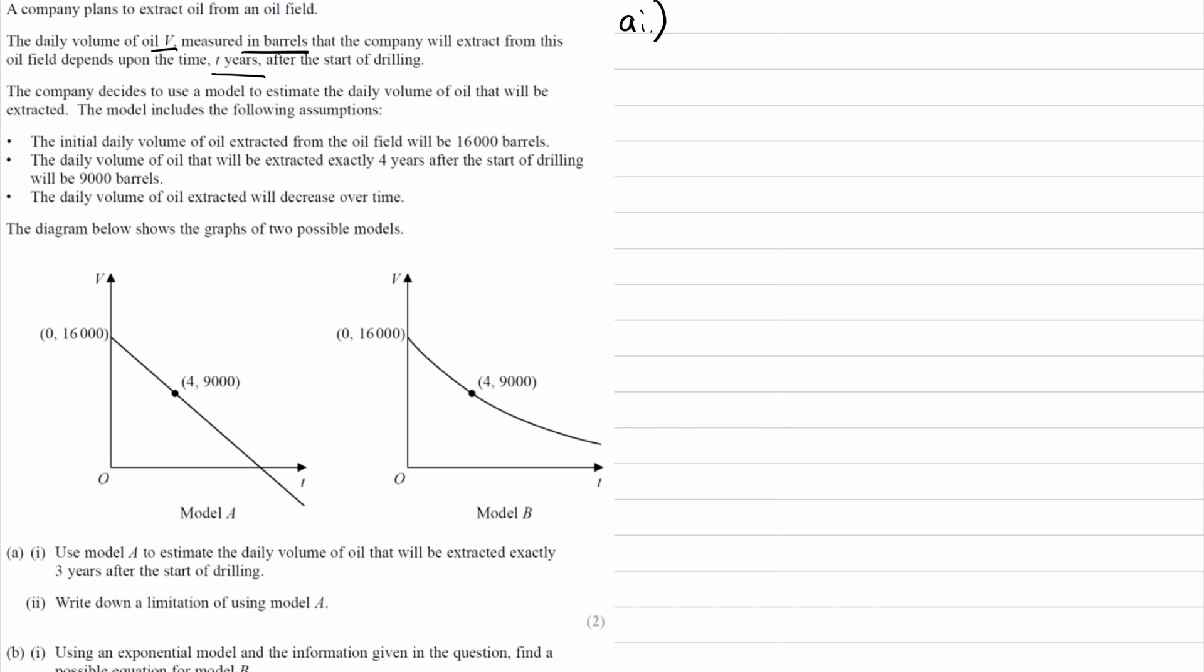The model includes the following assumptions: the initial daily volume of oil extracted from the oil field will be 16,000 barrels. The daily volume of oil that will be extracted exactly four years after the start of drilling will be 9,000. The daily volume of oil decreases over time.